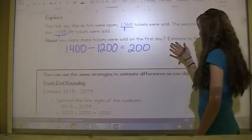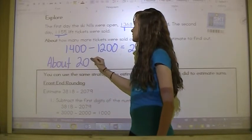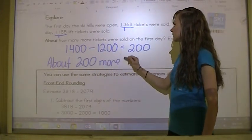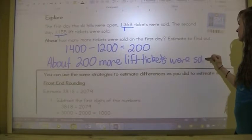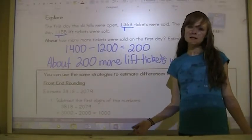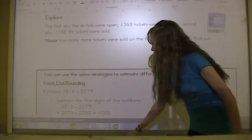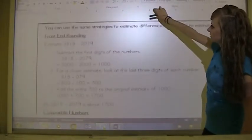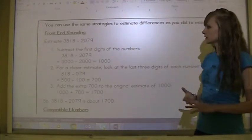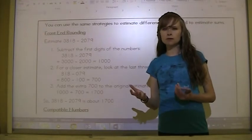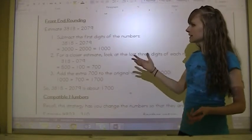We have to answer in the form of a sentence. About 200 more lift tickets were sold. That's basically what we're going to be doing. You can use the same strategies to estimate differences as you did to estimate sums. We looked at three strategies.